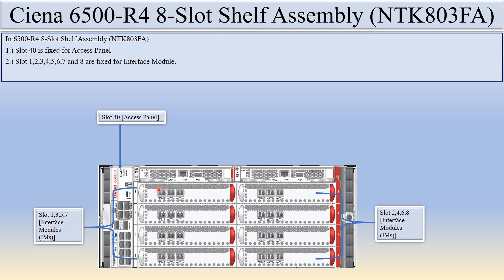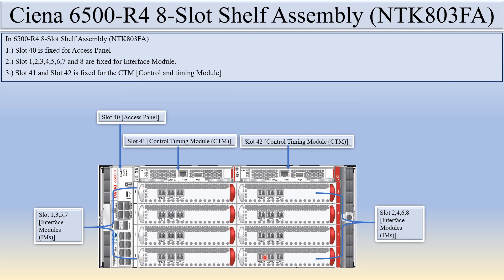On the left-hand side you can see the odd-numbered slots: one, three, five, seven. On the right-hand side you can see the even-numbered slots: two, four, six, eight. These slots are fixed for the interface module. The numbering starts from the upper left — one, then two, three, four, five, six, seven, eight.